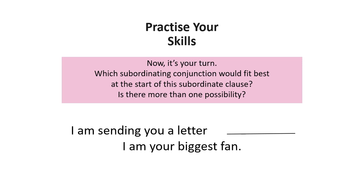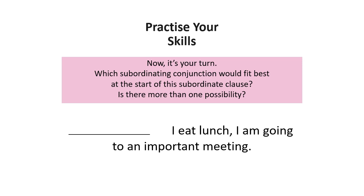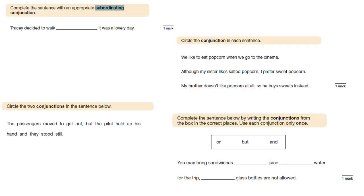'I am your biggest fan' — 'because' or 'as' would both work there. Can you fill in: 'I eat lunch — I am going to an important meeting'? See what fits. To finish, there are some questions to help with your grammar — pause the video and try to answer them, highlighting the coordinating or subordinate conjunctions. I hope this video has been really helpful, and all the best with your practice!